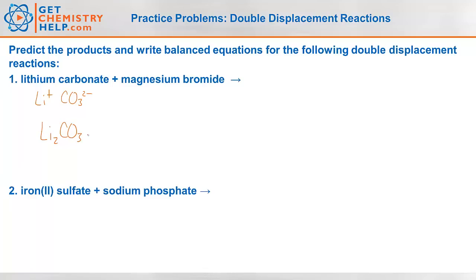If you have your solubility rules handy, you'll see that all lithium-containing compounds are aqueous. Magnesium is in group 2 of the periodic table so it's 2⁺. Bromide comes from bromine which is one away from the noble gases, so it's 1⁻. So magnesium bromide is MgBr₂. Bromides are generally soluble unless combined with silver, mercury(I), or lead(II), which this is not.